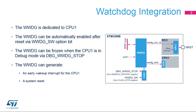The STM32WB's embedded WWDG is dedicated for use by CPU-1 only. The WWDG is connected to the APB-1 bus and clocked by the APB-1 clock. The WWDG early wake-up interrupt output is connected to the NVIC of CPU-1.